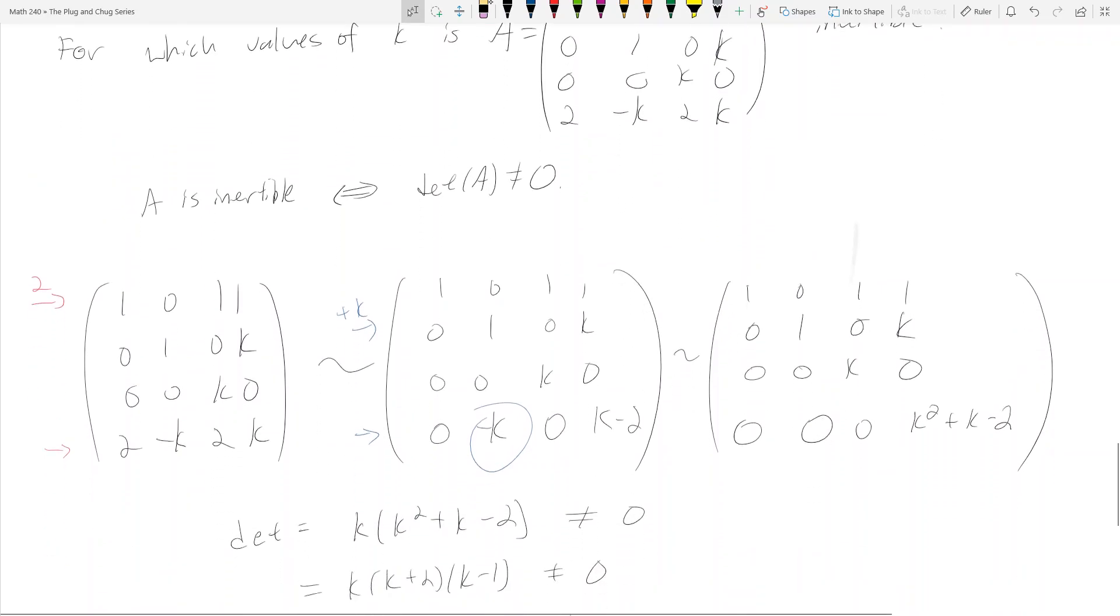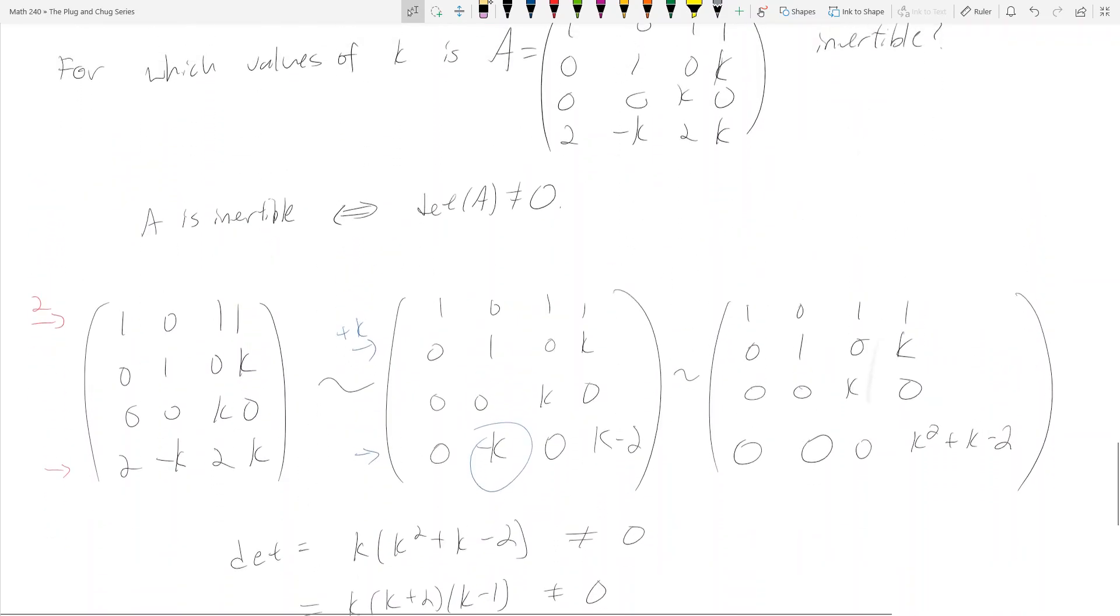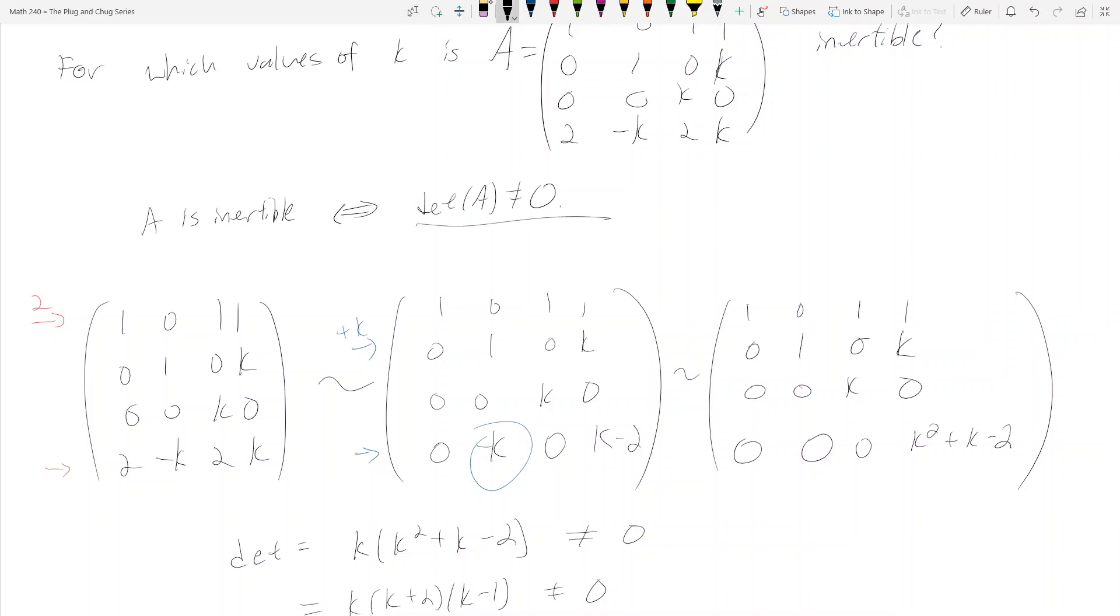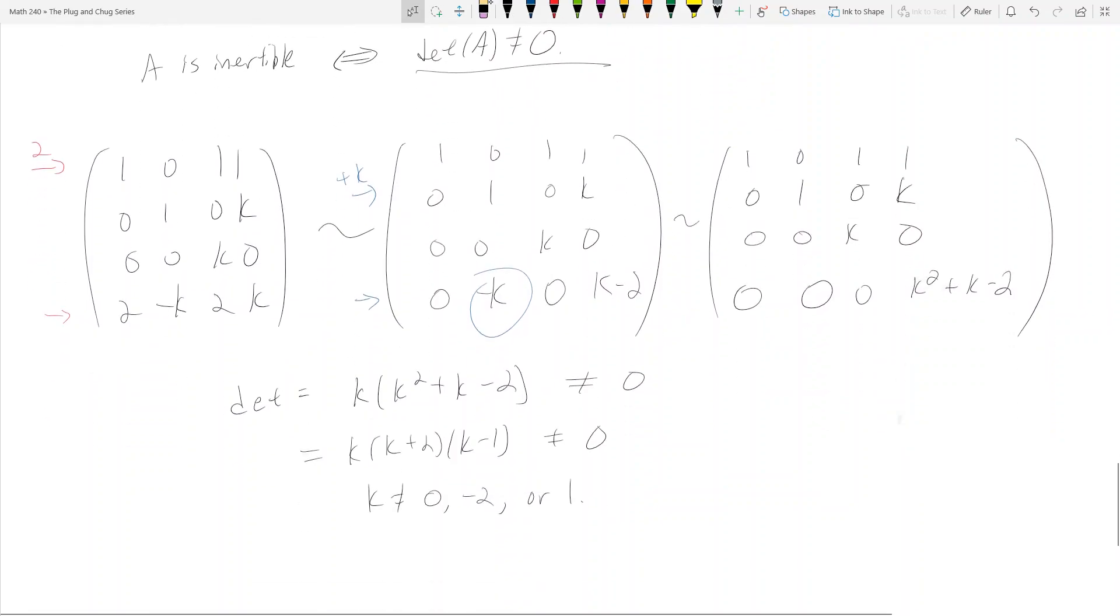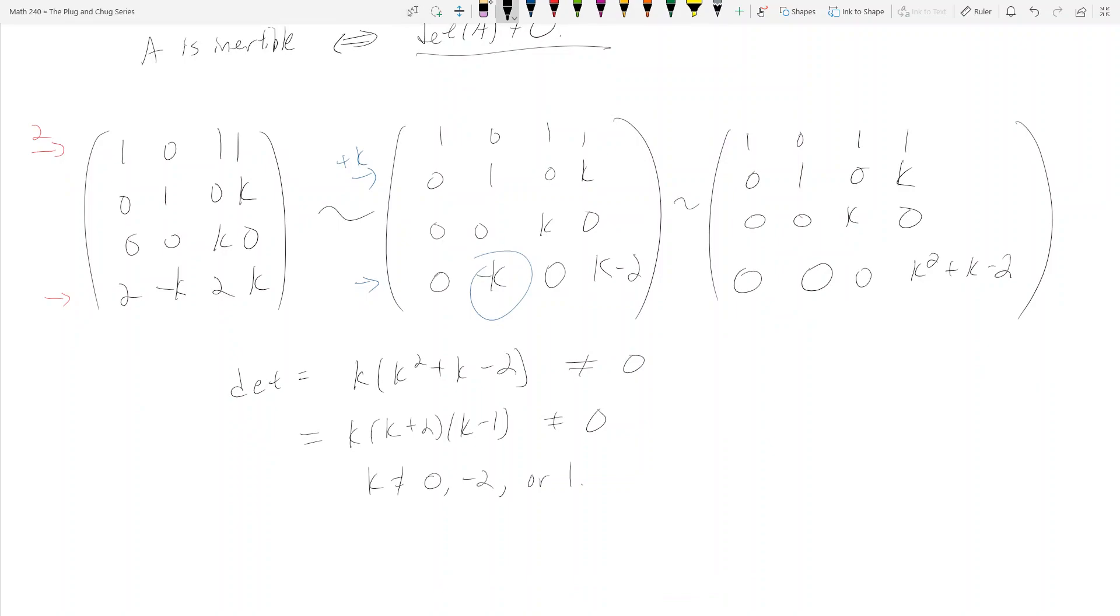So our final answer: for A to be invertible we need to find K such that the determinant is not equal to zero. The values of K that make the determinant equal to zero are 0, -2, or 1. So A is invertible if K is any real number, or complex number, and K is not equal to 0, -2, or positive 1.